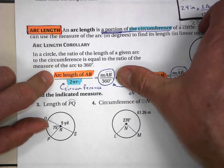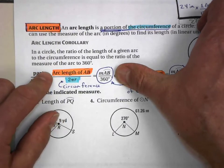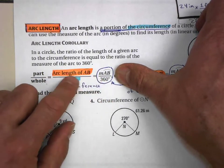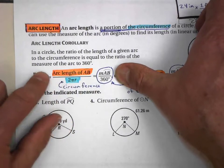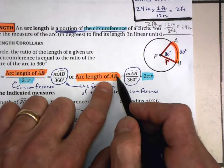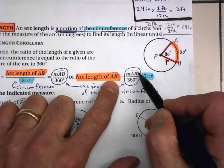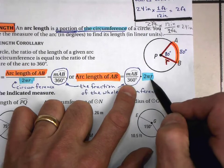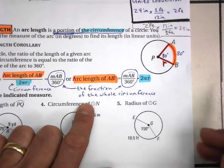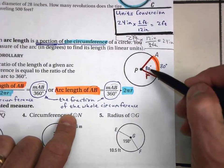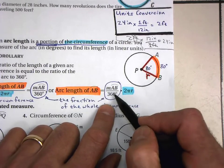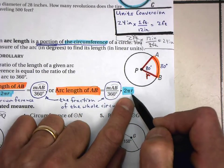To solve for arc length, multiply both sides of the proportion by 2πr — the circumference cancels on the left side. So the arc length of a particular arc equals the measure of that arc over 360 times the whole circumference. This fraction represents what portion of the full circumference you want. For example, if the arc measure is 80 degrees, you want 80/360 of the total circumference.